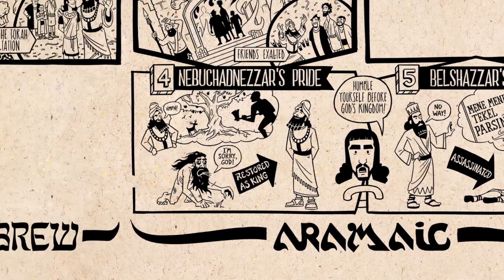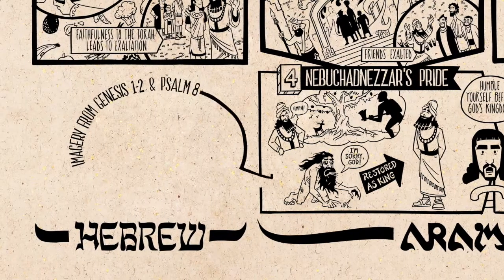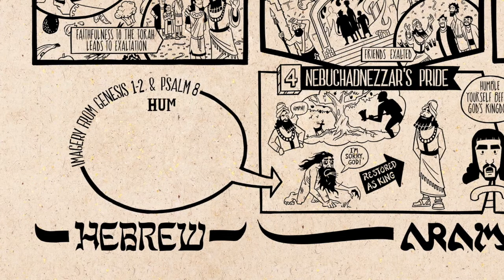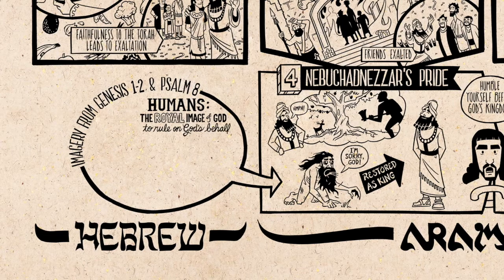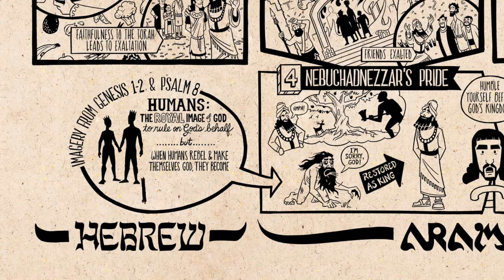These two stories draw imagery from Genesis chapters 1–2 and Psalm 8, where humans are depicted as the royal image of God — given authority to rule over the beasts of the field and the birds of the air on behalf of God, who is the world's true king. But when human kingdoms forget that, when they rebel and make themselves and their power into a god, they become less than human — like violent beasts who will face God's justice.